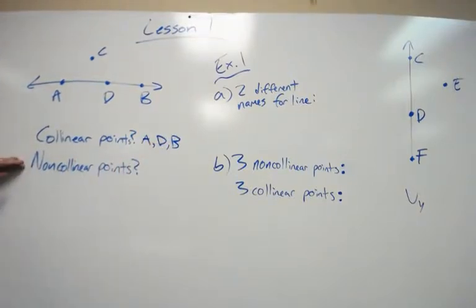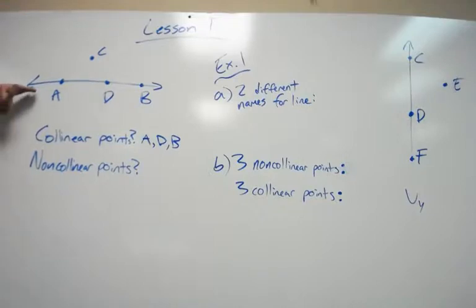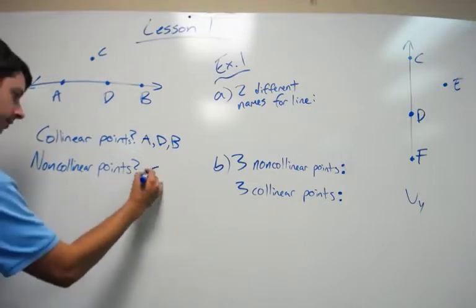Non-collinear points is, say this is the line we're referring to. Well, you see that point C is not on that line. So that would be referred to as a non-collinear point. So C would be non-collinear.